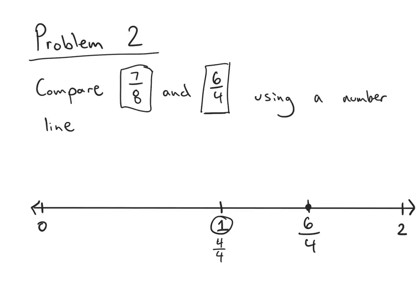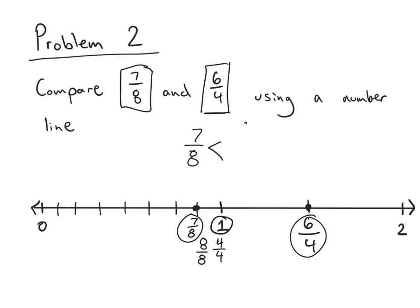Looking at 7 eighths, I'm once again going to use the benchmark of 1 whole. If I represent 1 whole in eighths, it would be 8 eighths, so 7 eighths is 1 eighth less than 1 whole. I'll partition the space between 0 and 1 into eighths — 8 equal parts — and 7 eighths falls right there on the number line. Because 7 eighths is further left, or closer to 0, than 6 fourths, I know that 7 eighths is less than 6 fourths. Reasoning with benchmarks makes it much easier to figure out where fractions fall on the number line and which one is larger when we compare.